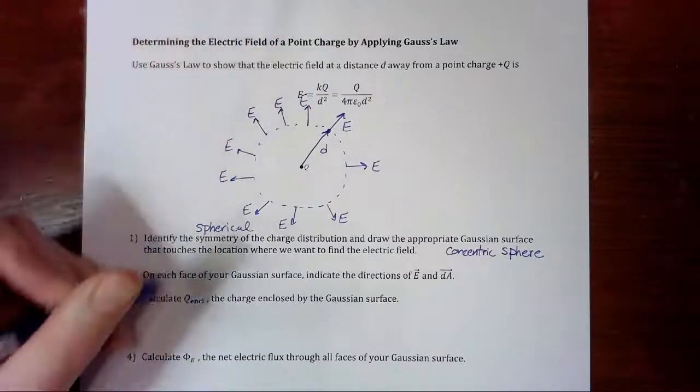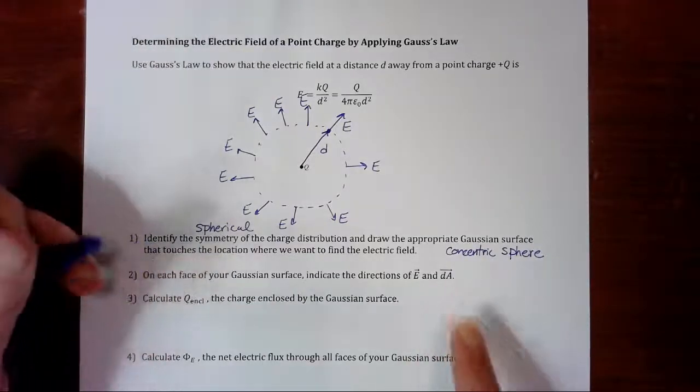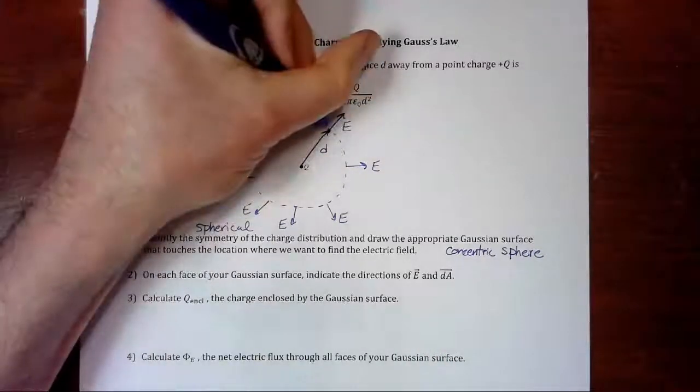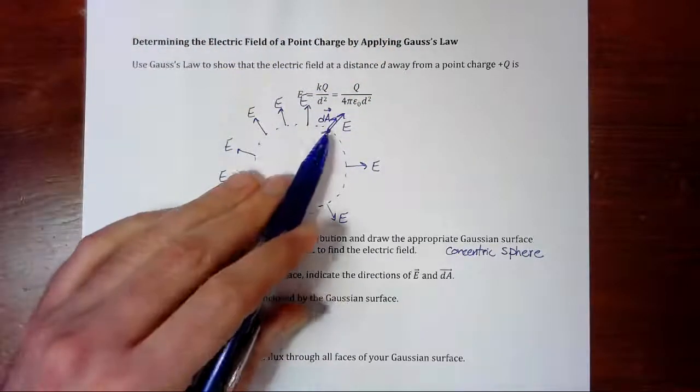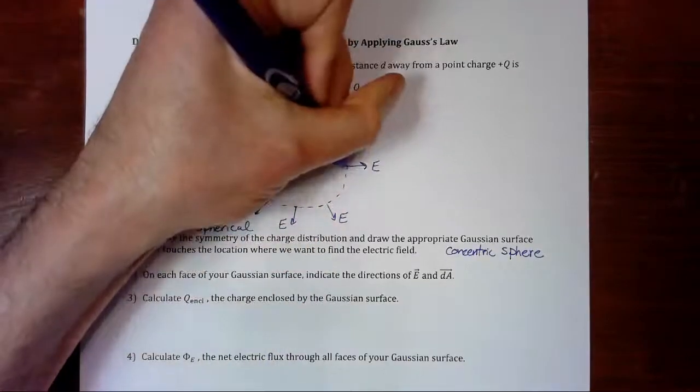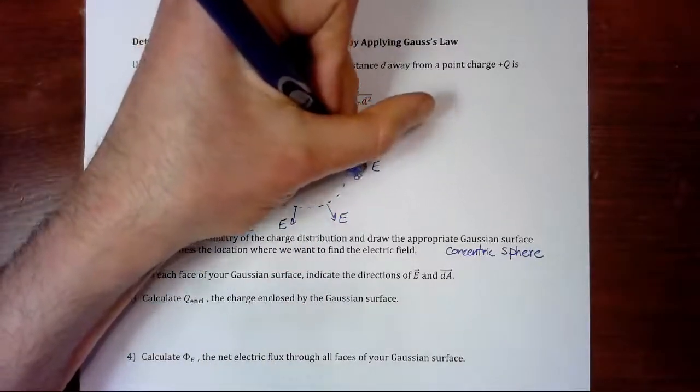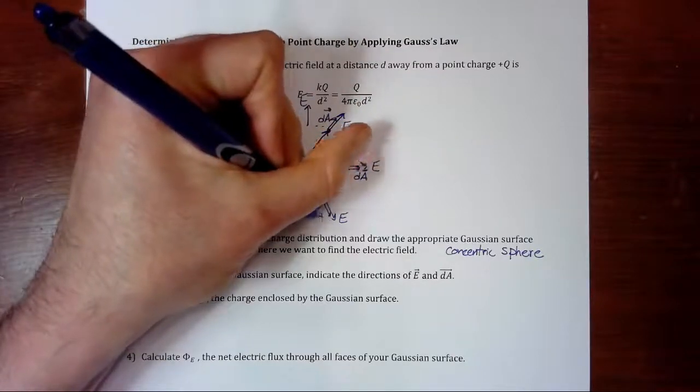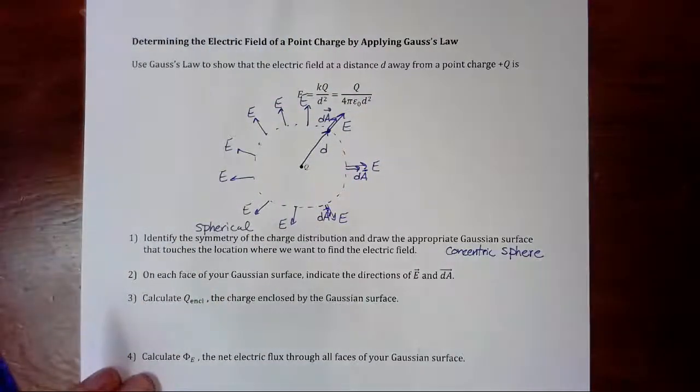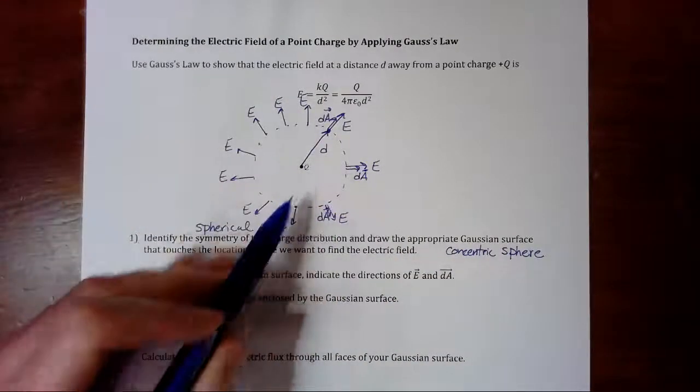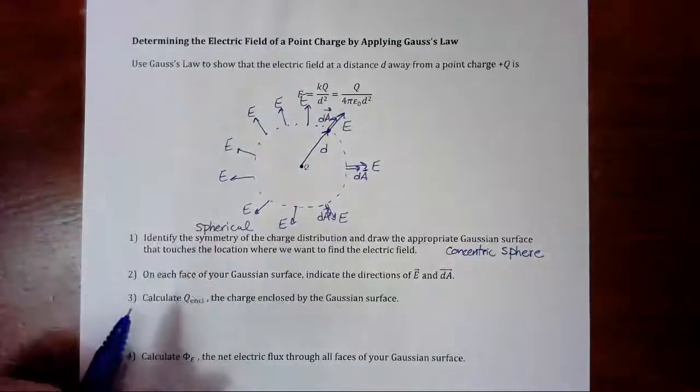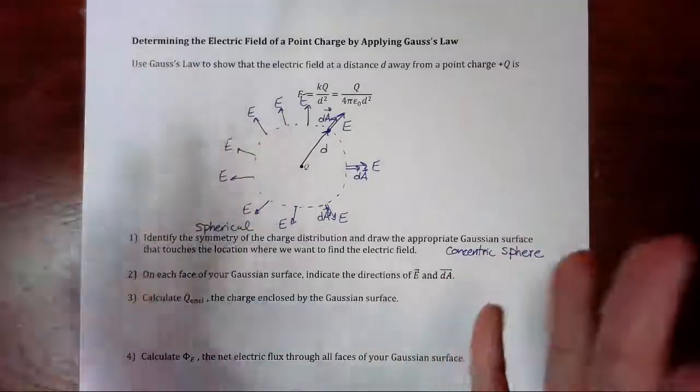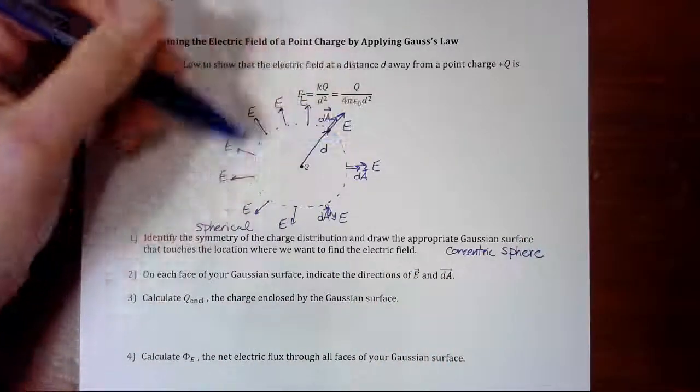And the area vector dA also points really outwards. Which means that dA and E are going to be parallel everywhere on the surface of the sphere. I'm just going to draw them here. But you get the idea it's the same everywhere. And then everywhere all around the whole three-dimensional surface, the electric field is going to be poking through,